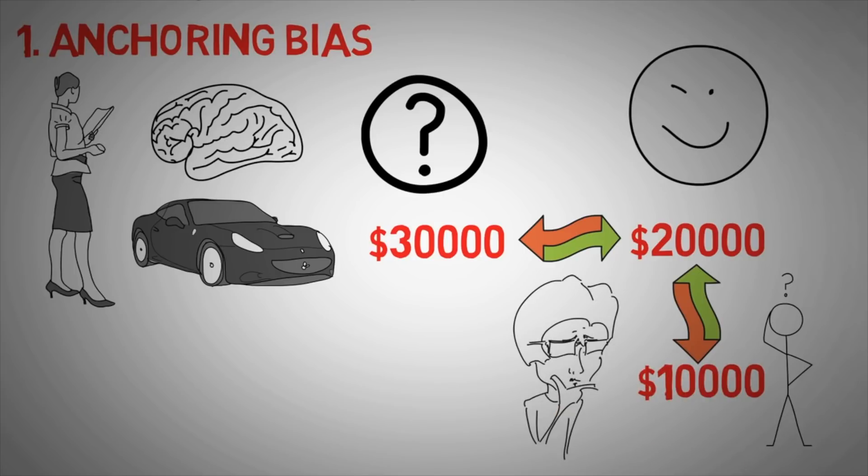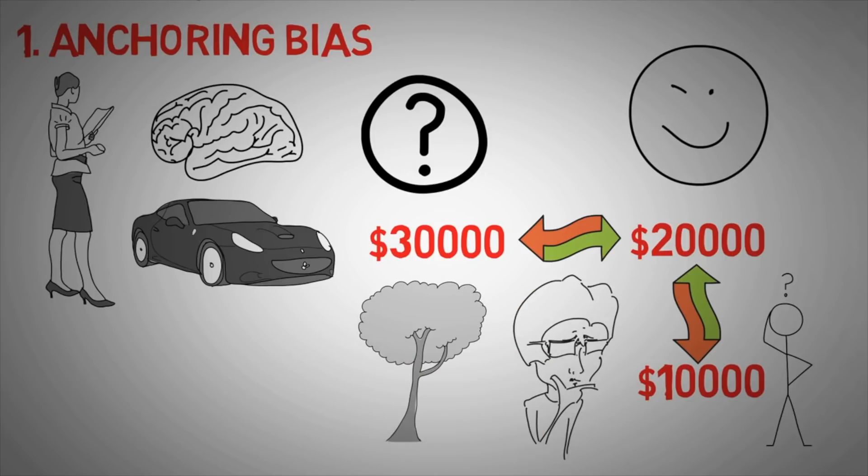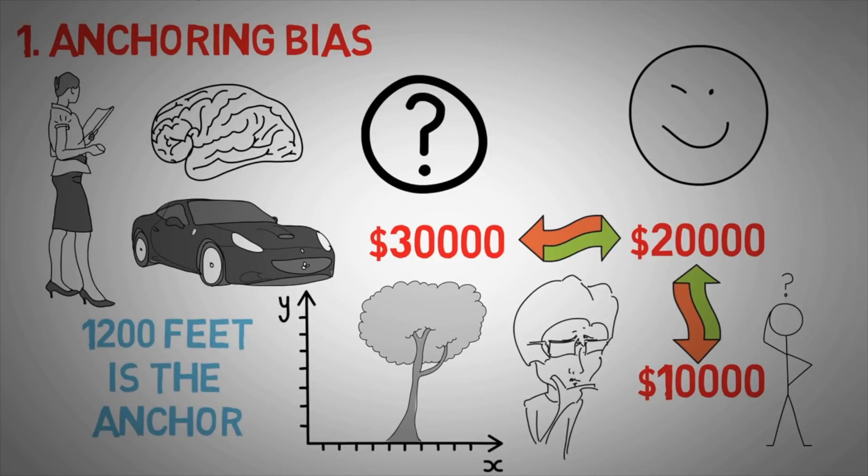This is just a very generic use of the anchoring bias and I don't want a bunch of comments about why a $30,000 car should be sold for $10,000. But another example is trees. What if I asked you if the tallest tree in the world was higher or lower than 1,200 feet? And if so, how tall? The same effect occurs if I asked you to guess out of thin air instead of giving you an anchor of 1,200 feet. The results are crazy.